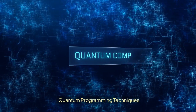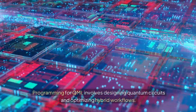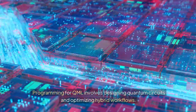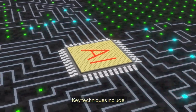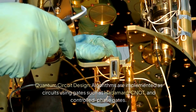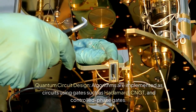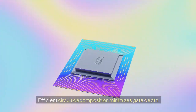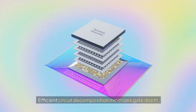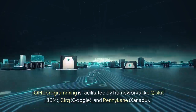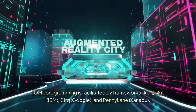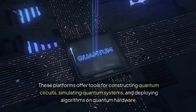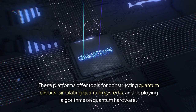Quantum programming techniques: programming for QML involves designing quantum circuits and optimizing hybrid workflows. Algorithms are implemented as circuits using gates such as Hadamard, CNOT, and controlled phase gates, with efficient circuit decomposition minimizing gate depth. QML programming is facilitated by frameworks like Qiskit (IBM), Cirq (Google), and PennyLane (Xanadu), which offer tools for constructing quantum circuits, simulating quantum systems, and deploying algorithms on quantum hardware.